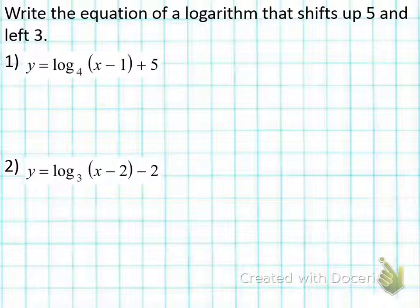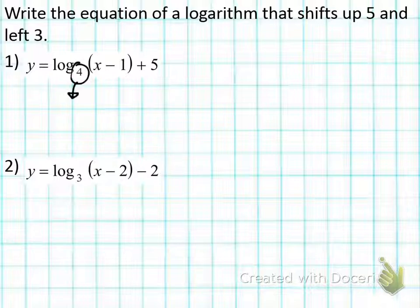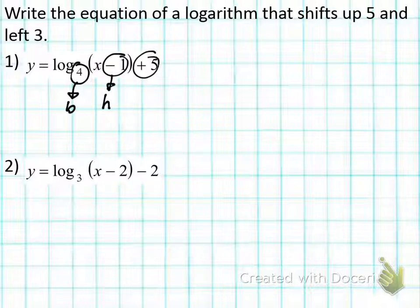So in your homework, you have a problem that says: write the equation of a logarithm that shifts up five and left three. So we need to learn how to shift it up and down, left and right. To shift it up and down, we take our K and shift it up. And to shift it left, we change our H. On number one, first thing you want to do is identify all the parts — our four is our base, negative one is our H, and this is our K.